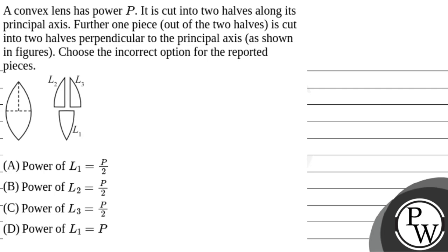Let's read out the question. A convex lens has power P. It is cut into two halves along its principal axis. Further, one piece out of those is cut into two halves perpendicular to the principal axis, as shown in the figure. Choose the incorrect option for the reported pieces.